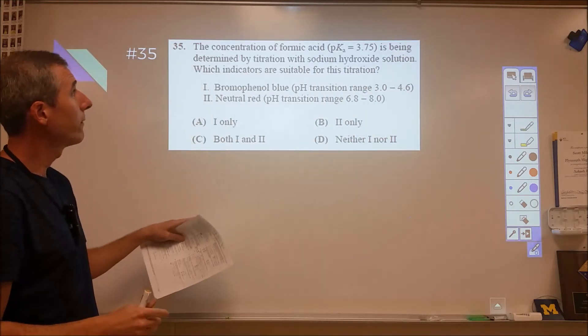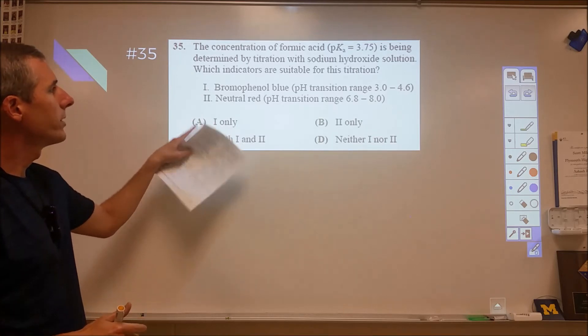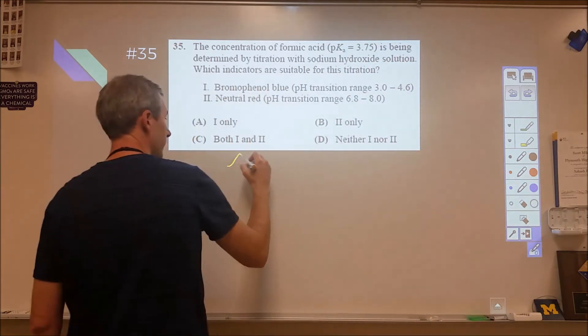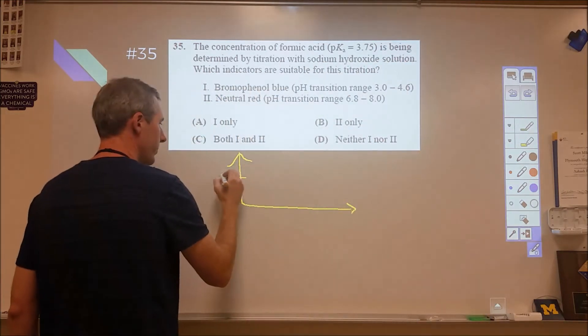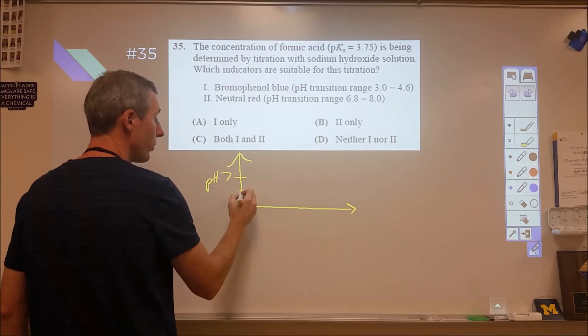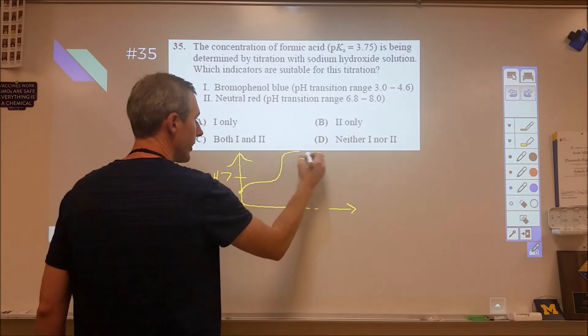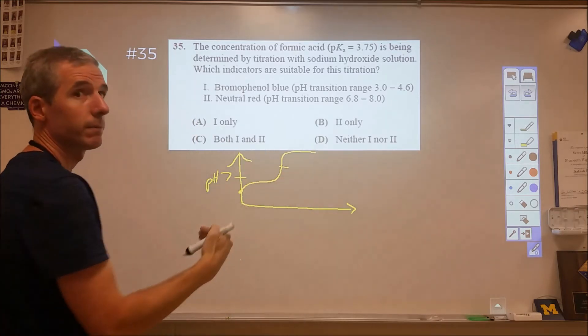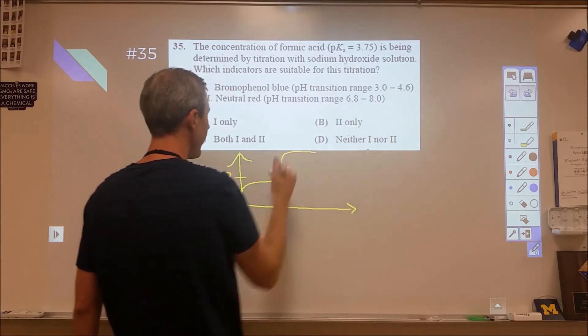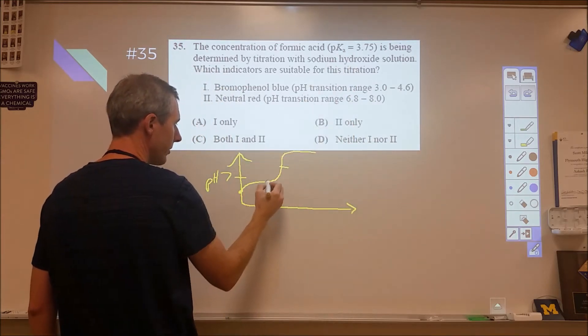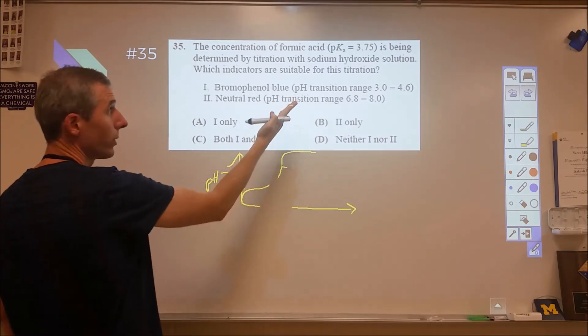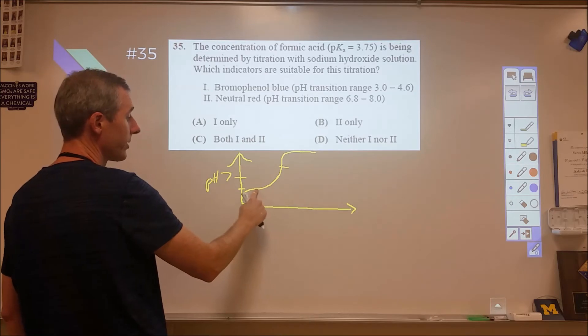Now we're looking at formic acid. It gives us the pKa. It wants to know which indicator is appropriate. So we're looking at a weak acid. If we give a quick sketch, here's a pH of 7. Then what we're going to see is we're going to start with some pH of a weak acid, then we're going to get into a buffering region, and then we're going to have our equivalence point somewhere above 7. So the bromophenol blue is a terrible choice here because that's right around the pKa, and that pKa should be at this pH of 3.75.